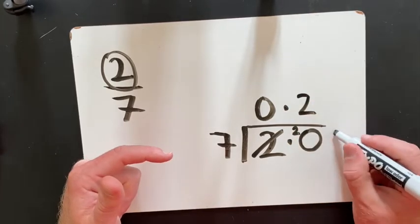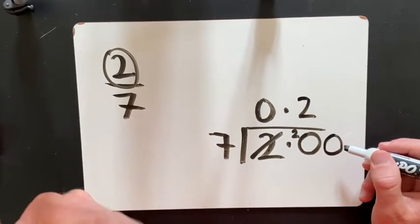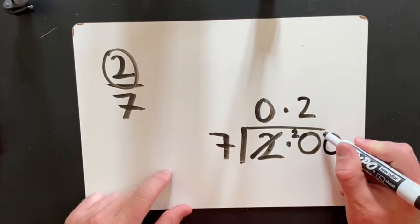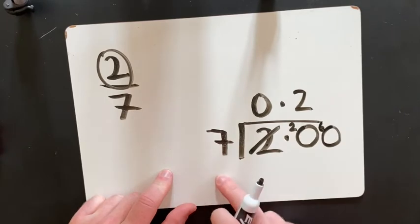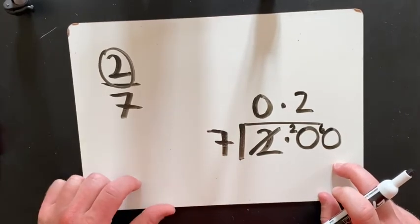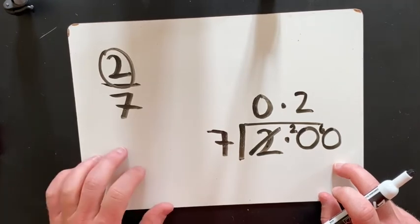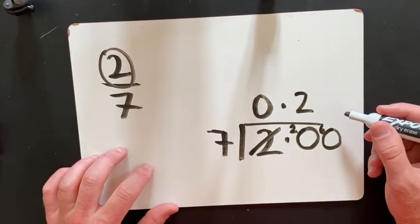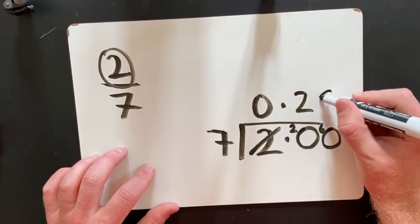How many remainders are there? Well, 2 7s are 14. So that gives me 6 remainders. How many 7s in 60? Well, 7 7s are 49. 8 7s are 56. So that would be 8.